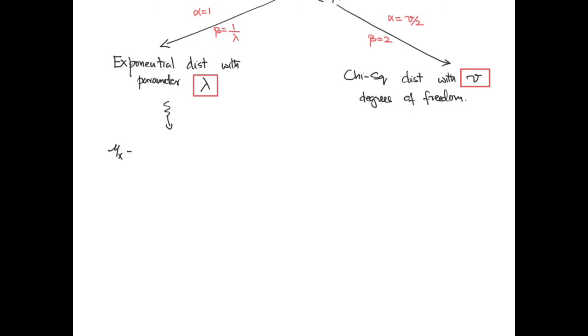The expected value, the variance, and the standard deviation for the exponential distribution and the chi-square distribution are calculated as follows.